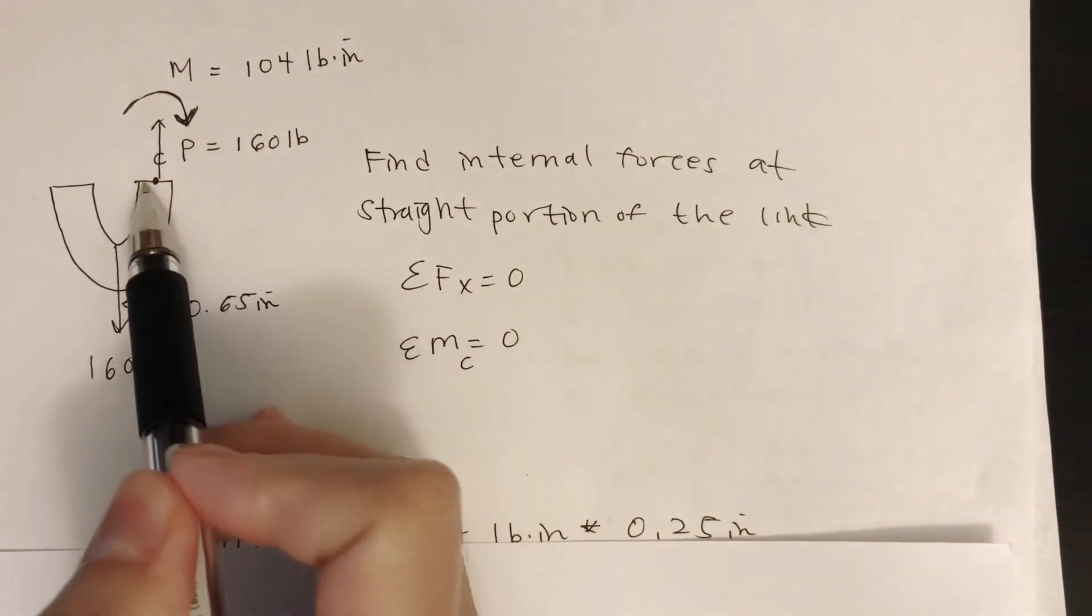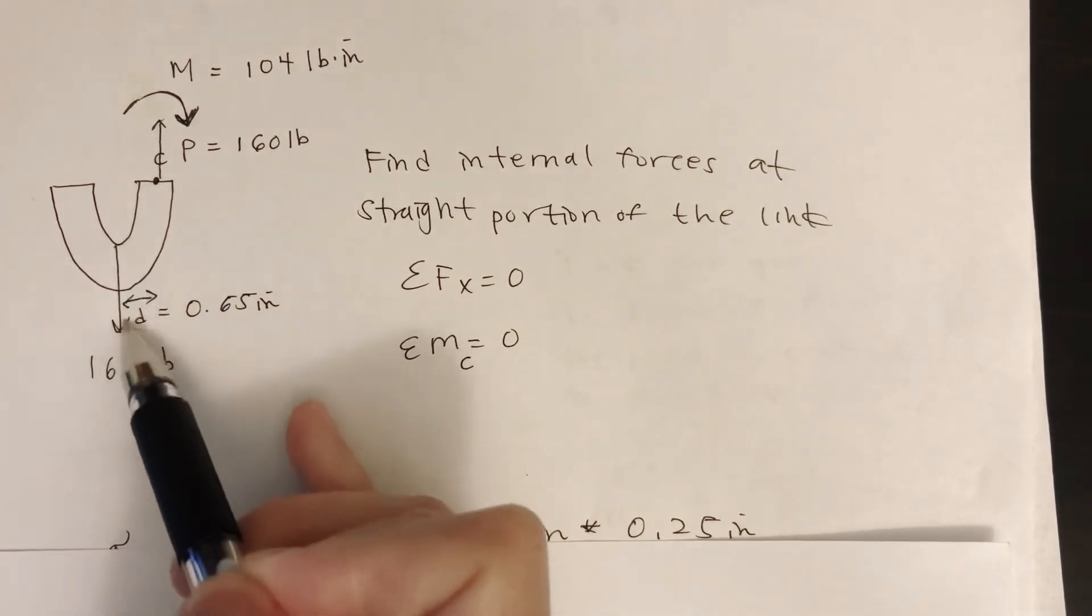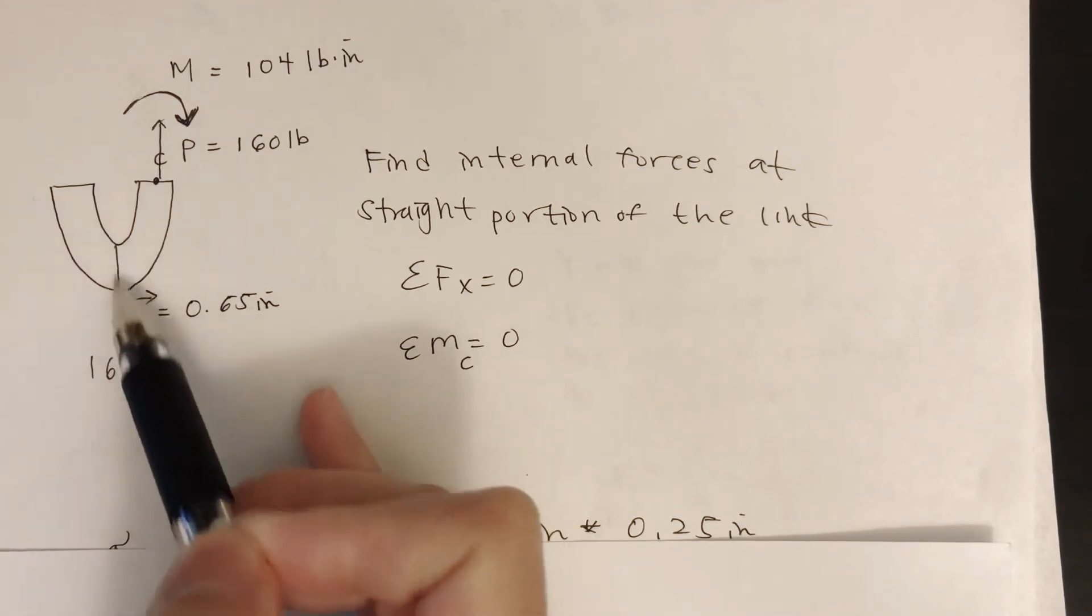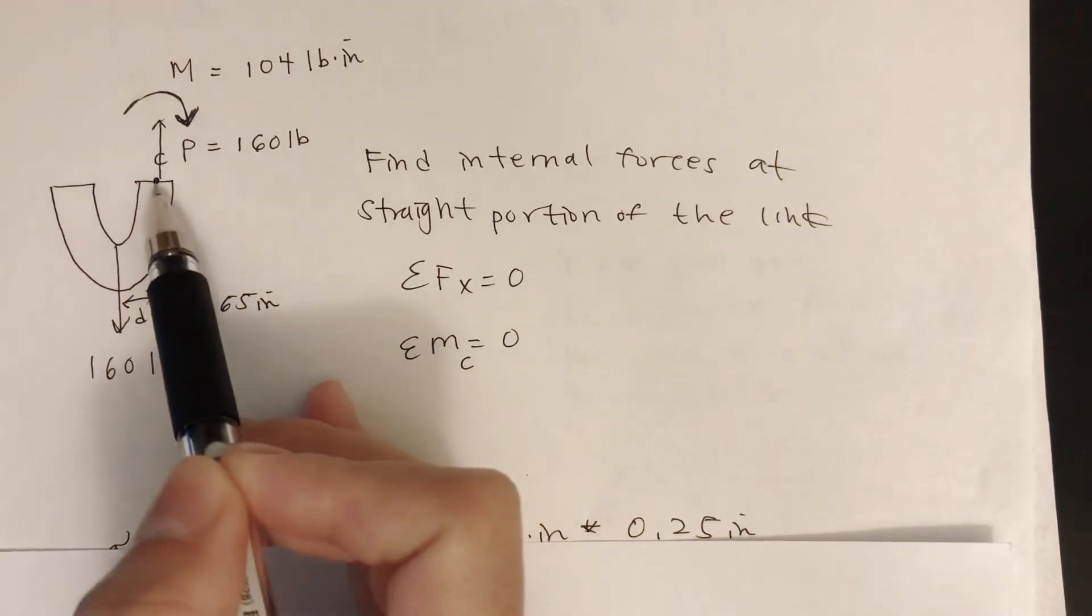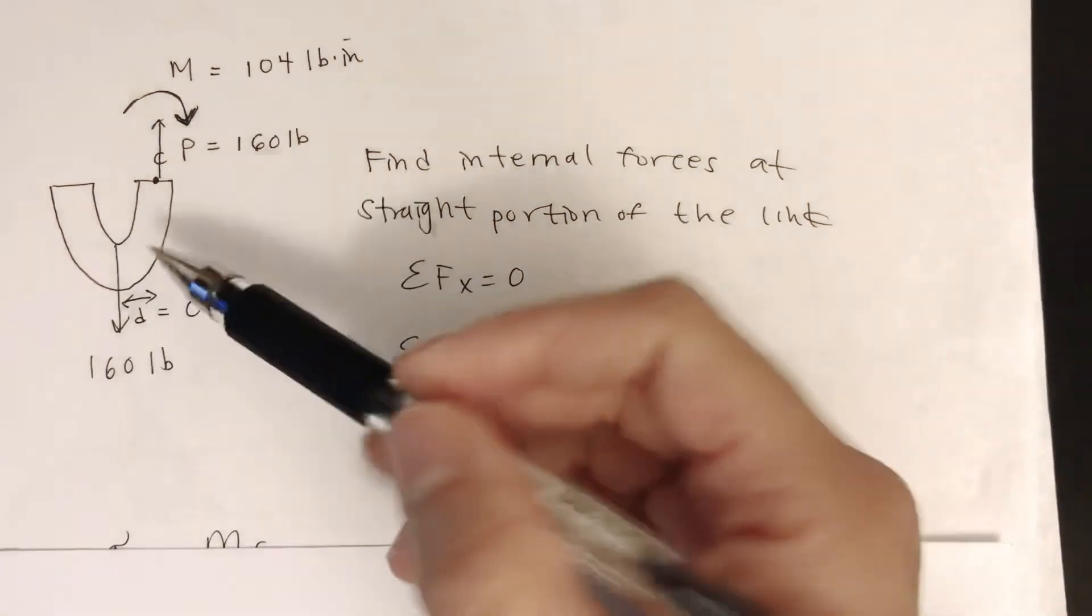If we take a cut at the straight portion of the link, this load is going to cause an eccentric load because this load does not go through the centroid of this cross section. This is eccentric loading.